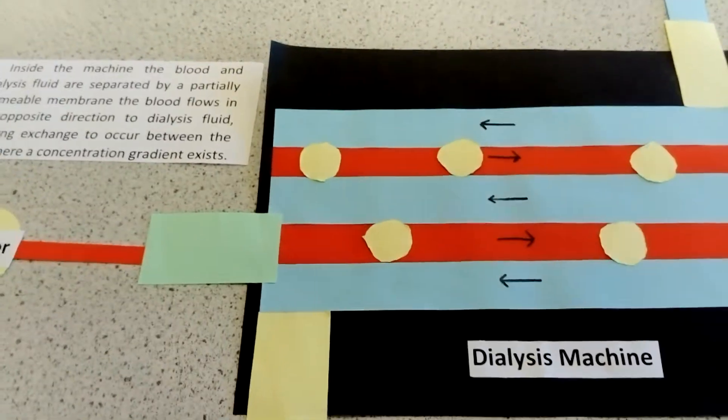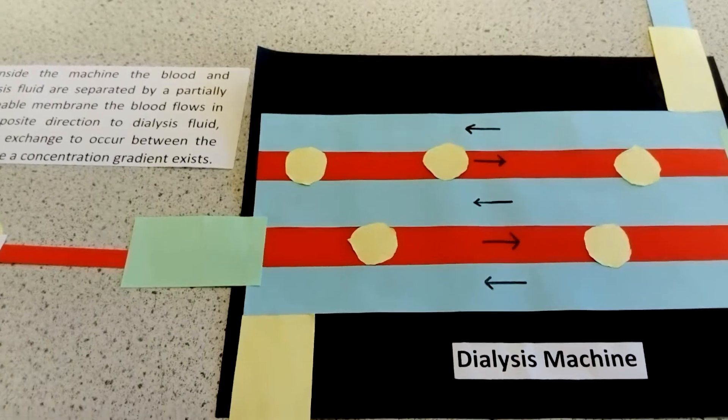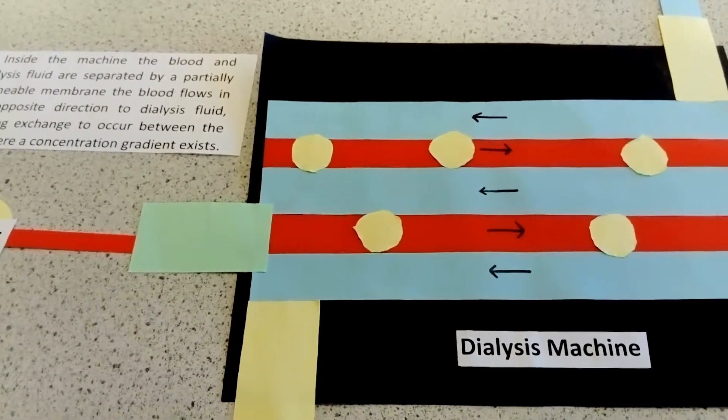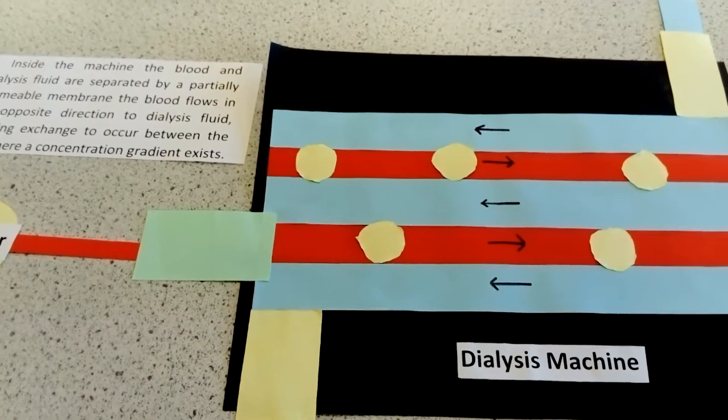As dialysis fluid has no urea in it, there is a large concentration gradient, meaning that the urea moves across from the blood into the dialysis fluid.